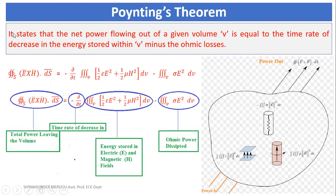The mathematical expression for the Poynting theorem is: closed surface integral of E̅ × H̅ · dS̅ = −(∂/∂t) volume integral of (1/2 ε E² + 1/2 μ H²) dv − volume integral of σ E² dv.